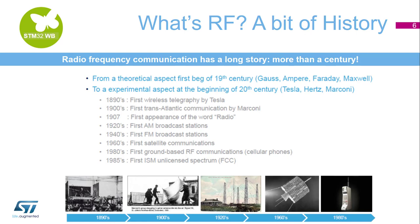In the 1890s, first wireless telegraphy by Tesla. In the 1900s, first transatlantic communication by Marconi. In 1907, first appearance of the word radio. In the 1920s, first AM broadcast stations. In the 1940s, first FM broadcast stations. In the 1960s, first satellite communication. In the 1980s, first ground-based RF communications. In 1985, first ISM unlicensed spectrum defined by the FCC.